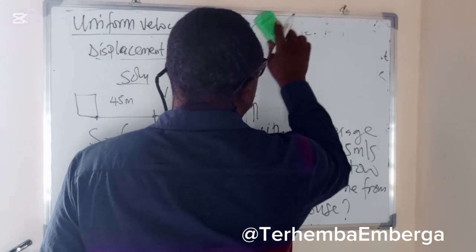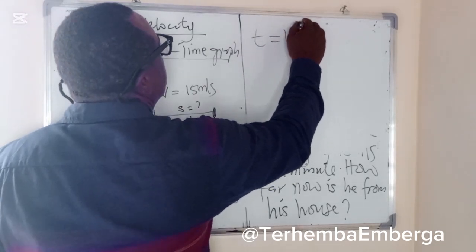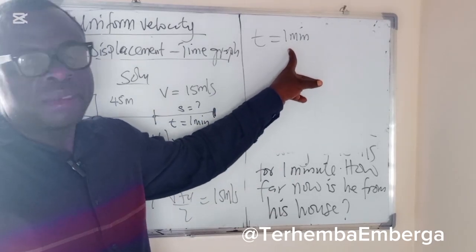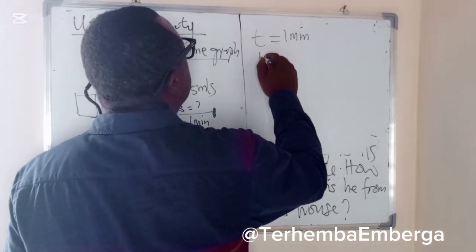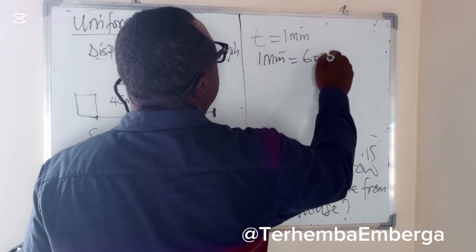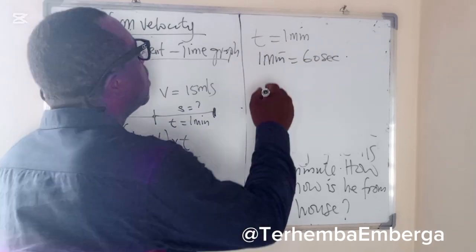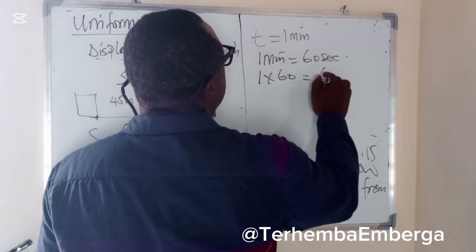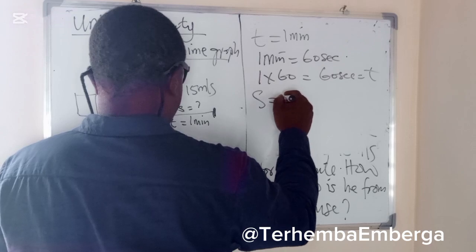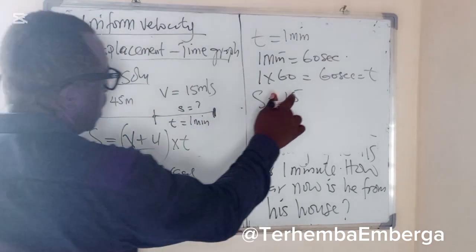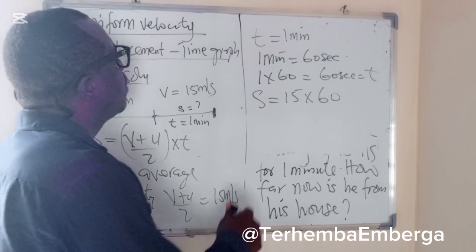So we use S equals average velocity times T, where the average velocity V plus U over 2 equals 15 meters per second. Time is given as one minute, but minutes are not an SI unit, so we need to convert to seconds. One minute is equivalent to 60 seconds, so time equals 60 seconds. The distance is therefore equal to 15 times 60, which gives us 900 meters.